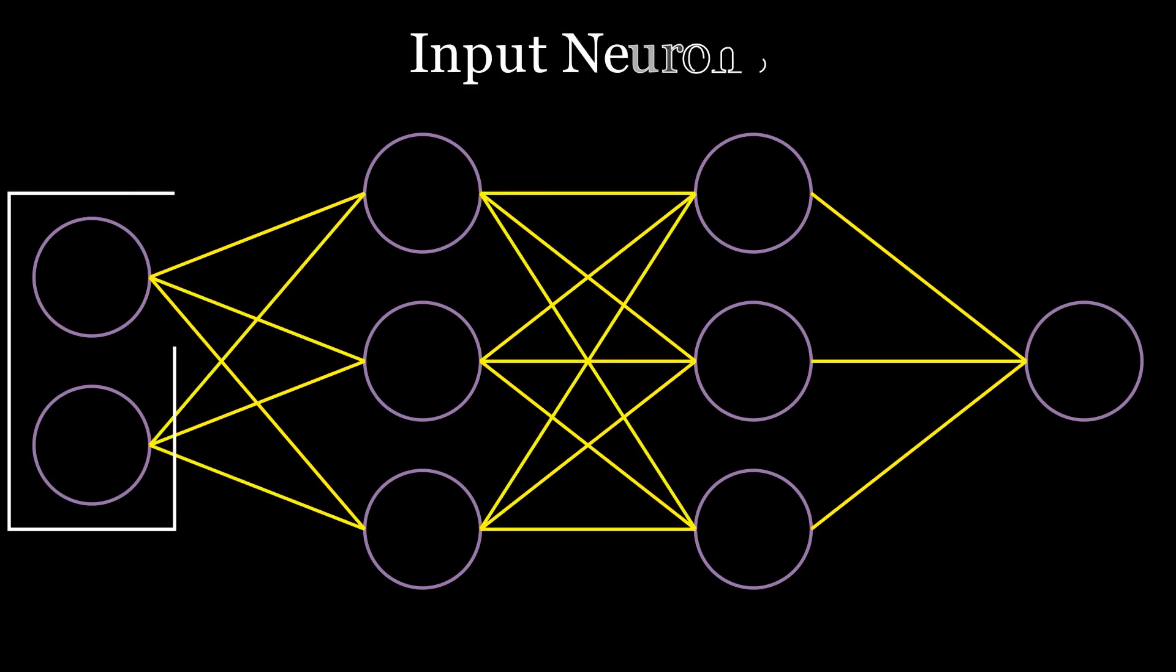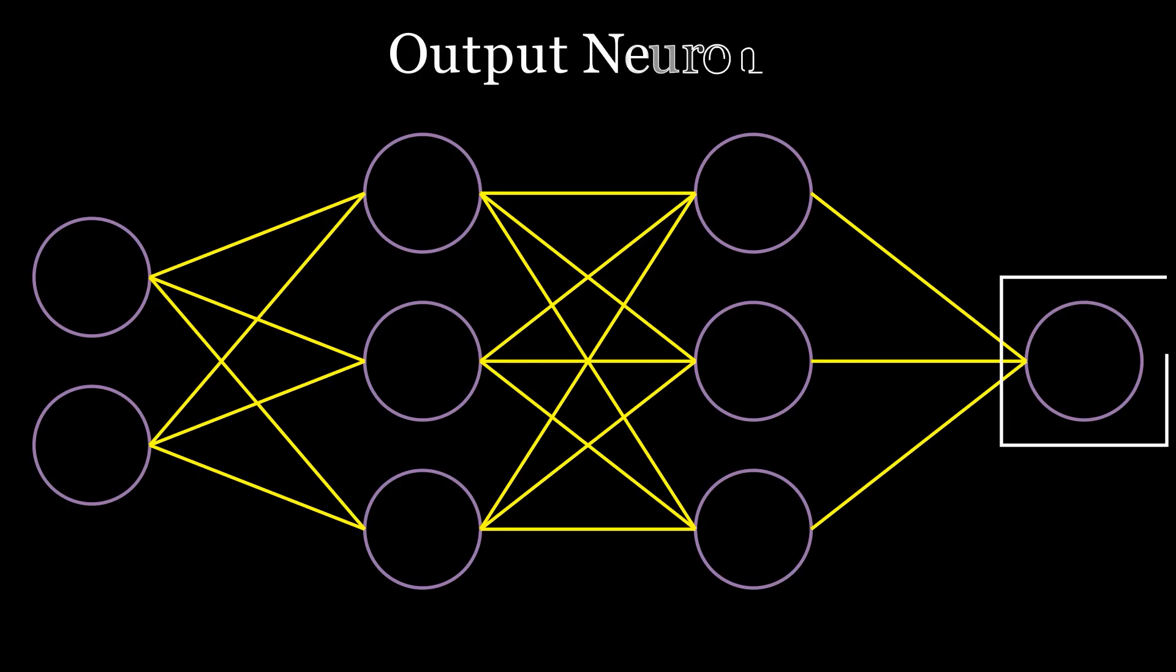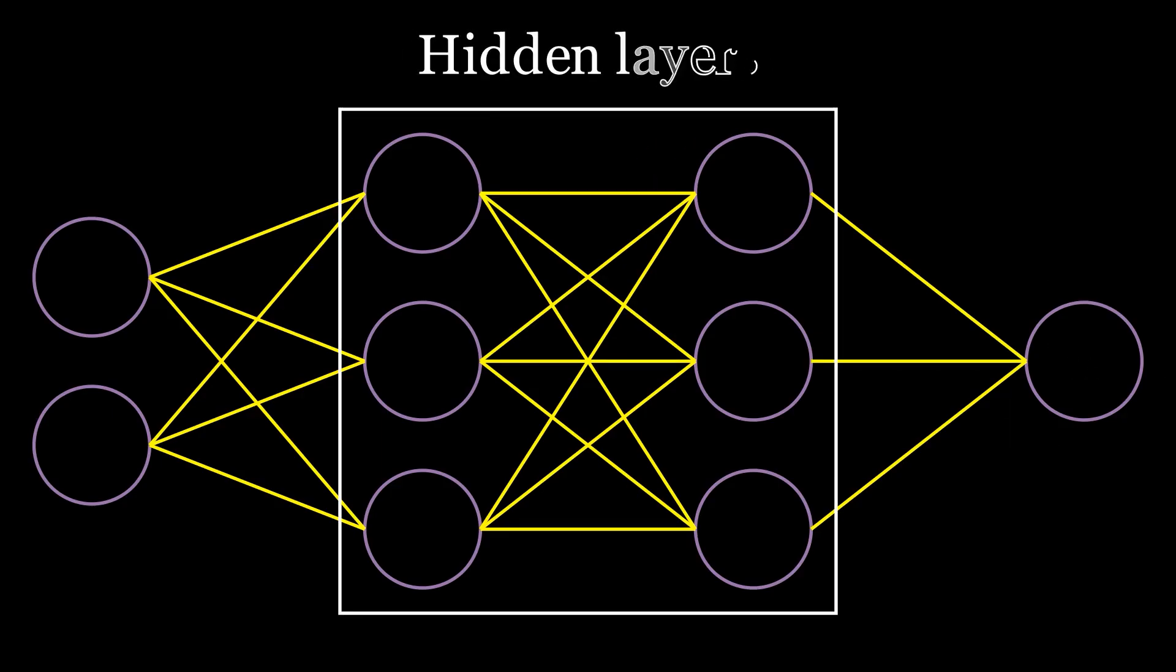The first column of the neural network represents input neurons. As the name implies, these are the neurons where you input data. The last column, or more commonly layer, contains neurons responsible for the output. The layers in between are called the hidden layers. This is where all the AI magic happens.